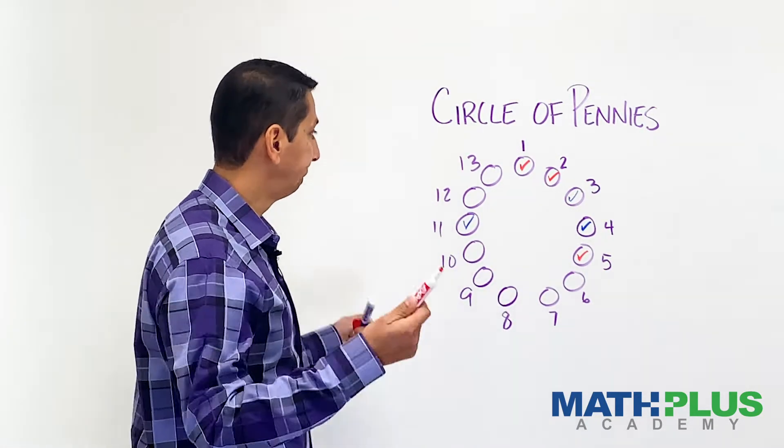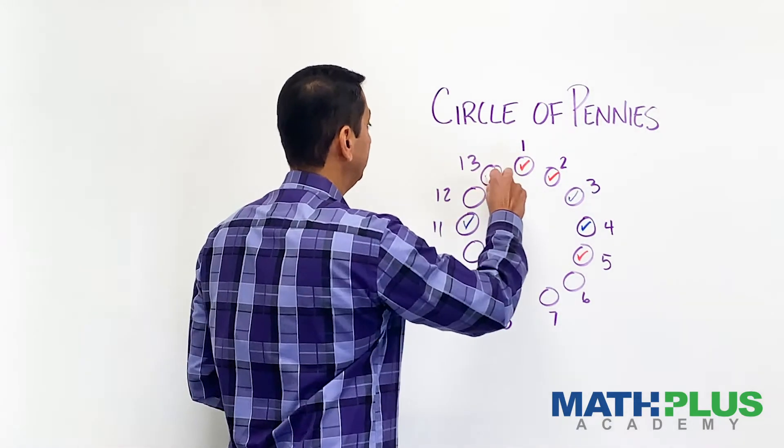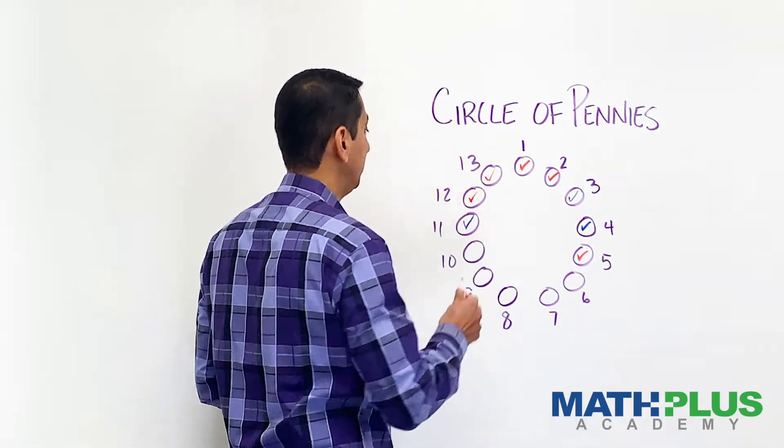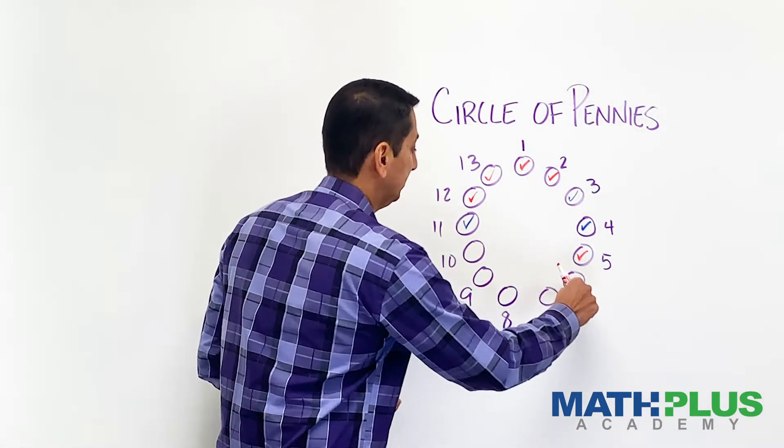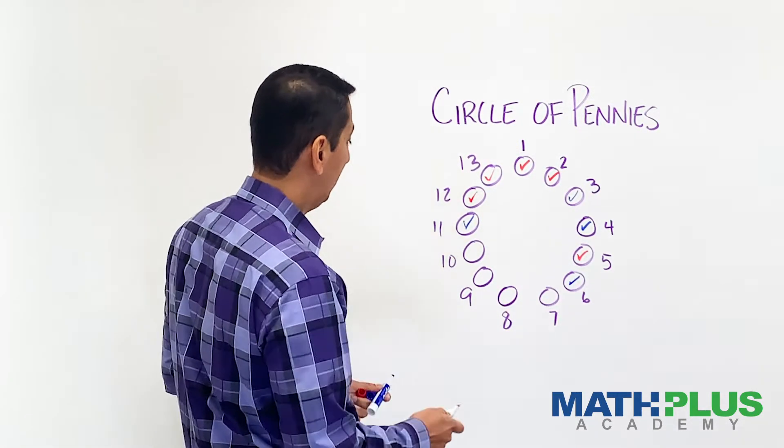Player one, let's see, takes 13, and maybe 12 also. Great. Now we have this little segment down here. Player two takes six. There's four left.